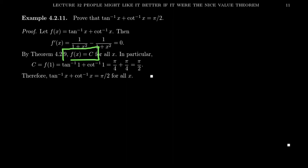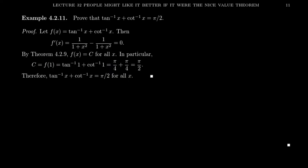But what's that constant? It doesn't matter where you evaluate the function — it's always going to be the same. So let's evaluate the function at one. Arc tangent of one is pi over four, because we're looking for the angle where tangent equals one — that is, where sine and cosine are equal, which happens at pi over four, or a 45-degree angle. Arc cotangent evaluated at one: cotangent is cosine over sine, so we need the angle where cosine over sine equals one, which likewise happens at pi over four. Pi over four plus pi over four equals pi halves. Since our function f is constant, and it equals pi halves at one, it's always equal to pi halves. This proves by the mean value theorem that the sum of arc tangent and arc cotangent is always equal to pi halves.